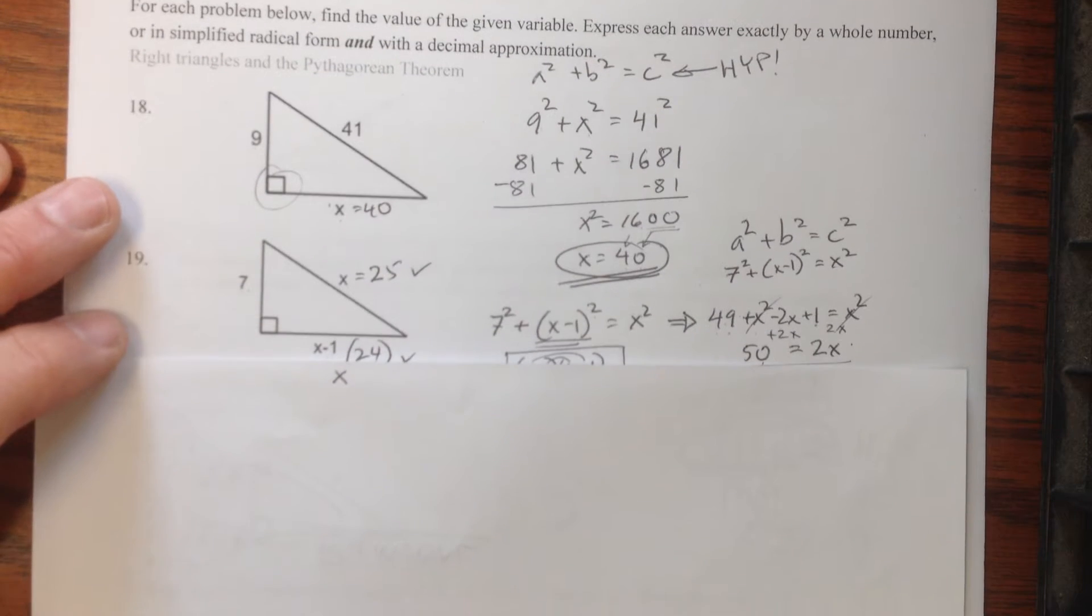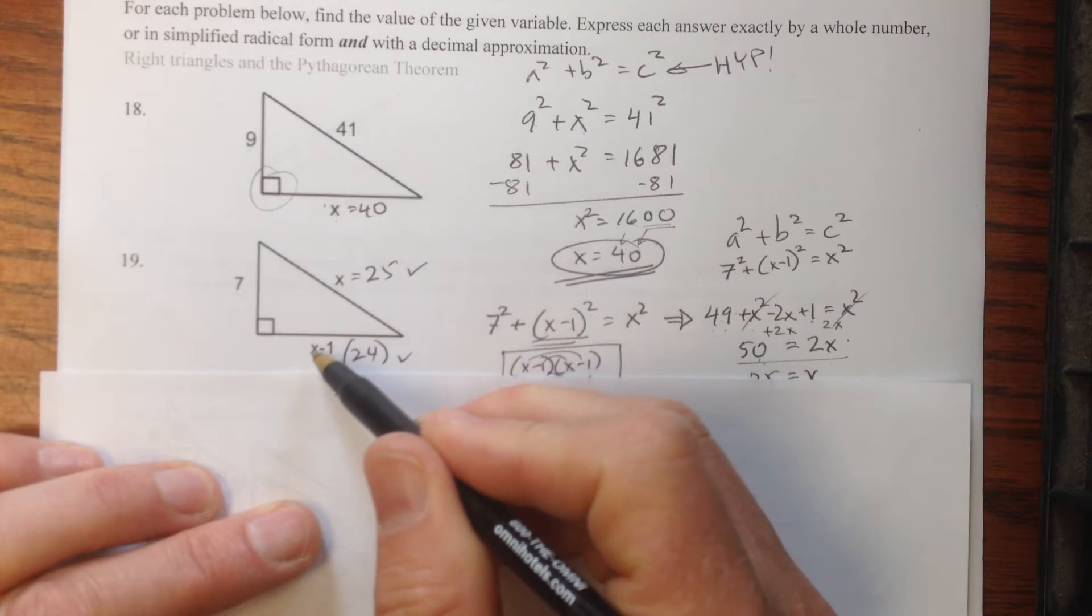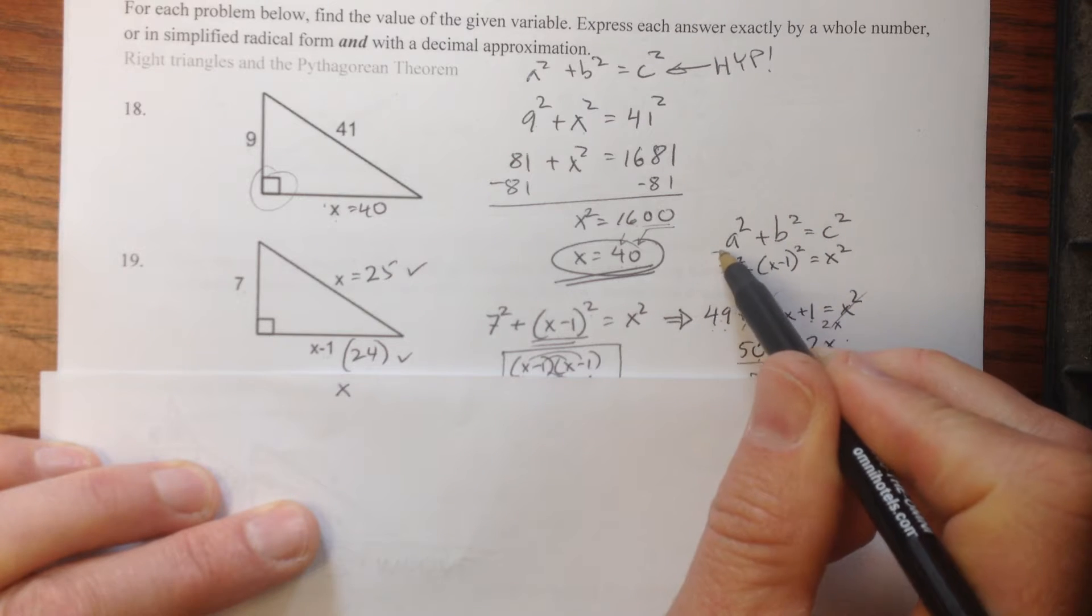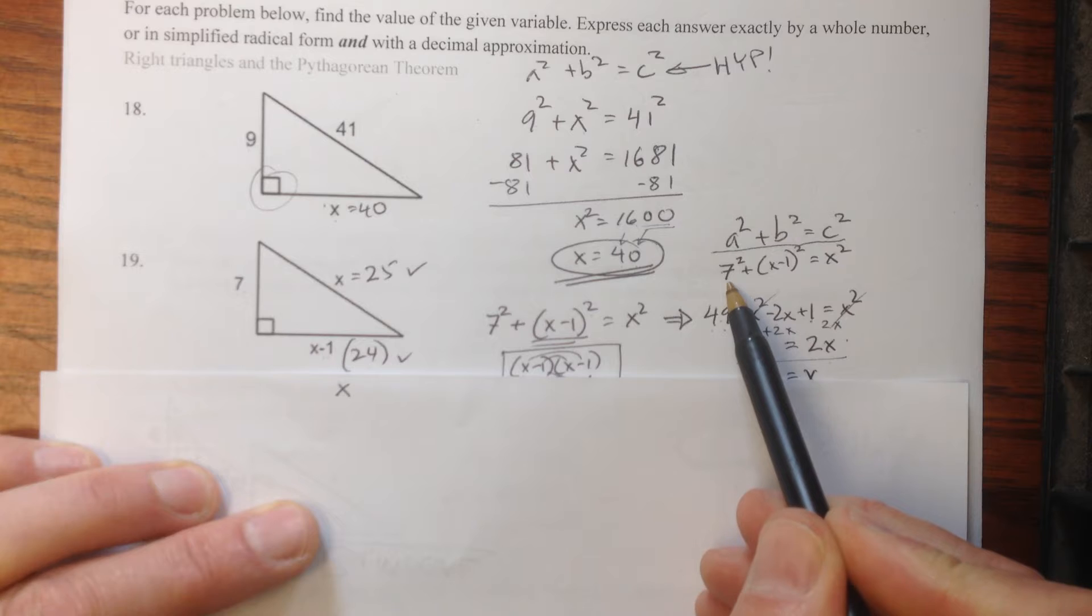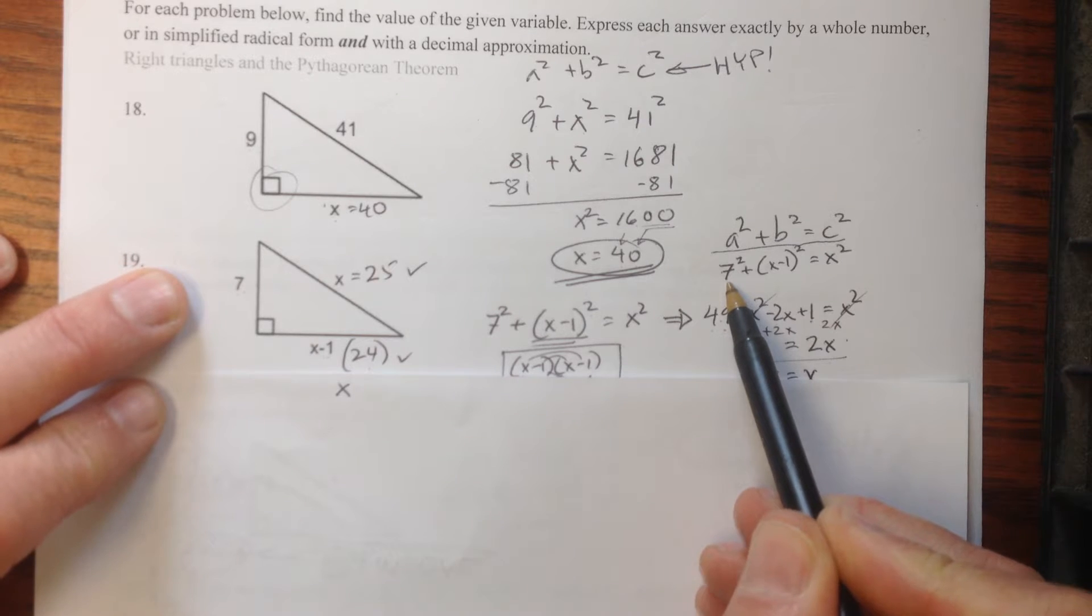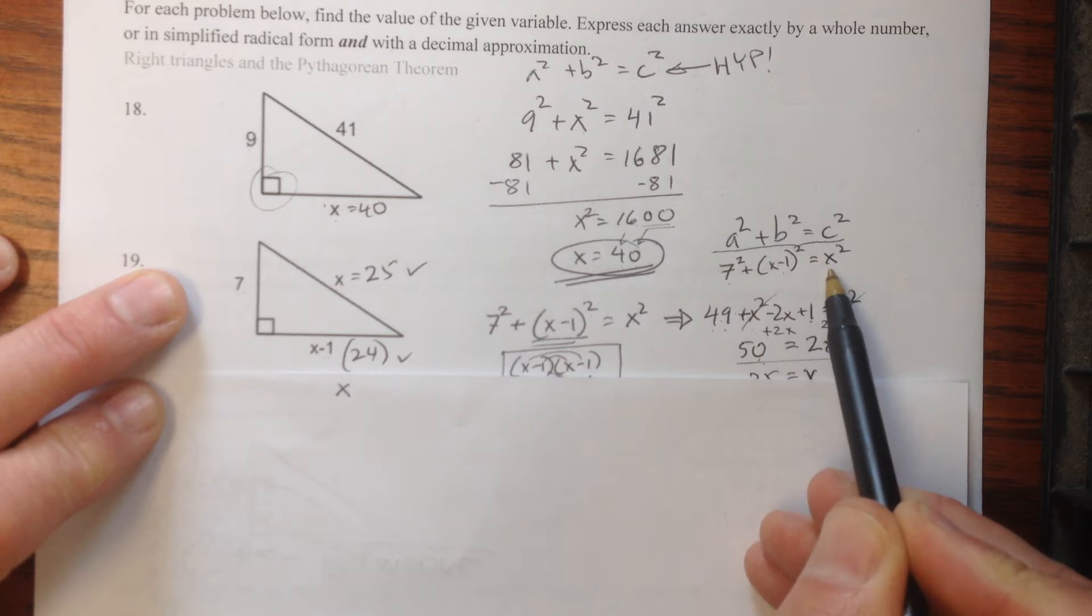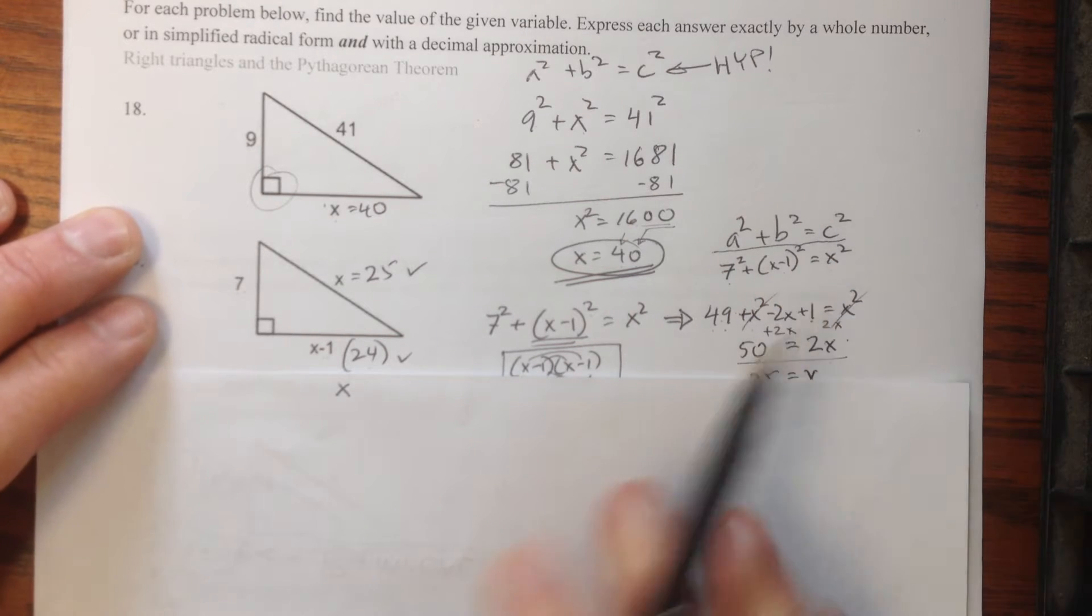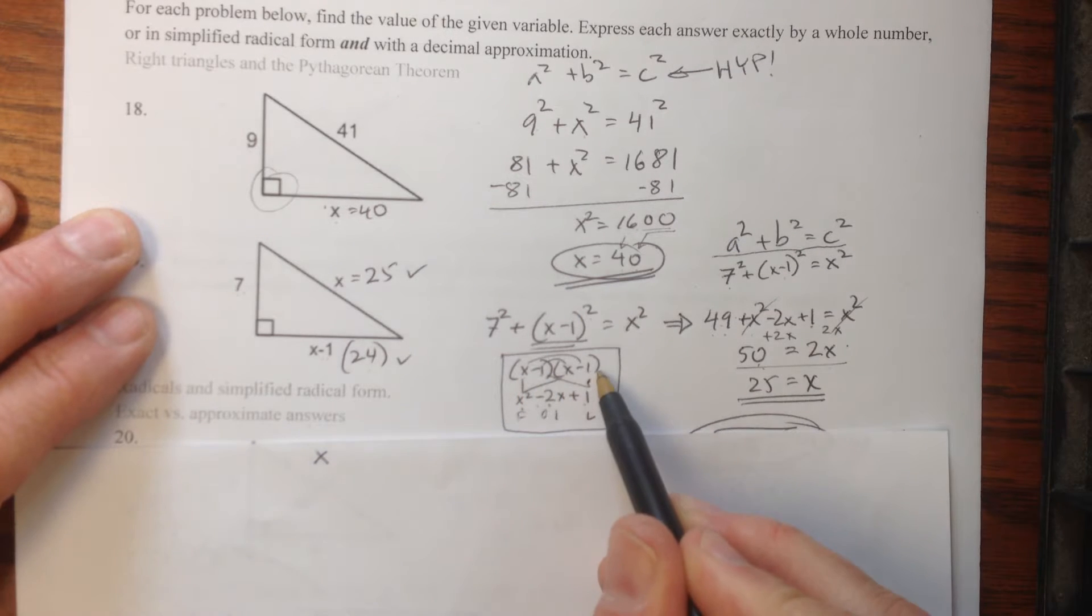The next one then is similar but different. This is maybe a little bit of a challenge because you've got x minus 1 and x, but just show me that you know the basics. Start off with Pythagoras here again and then fill in that you know that one of the legs is 7 and what you don't know is x minus 1 and x. And when we square each of those, we've got to be careful to foil this out. So I did some foiling over here, it's x minus 1 times x minus 1.